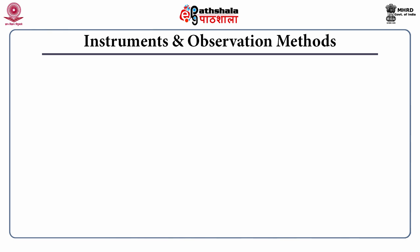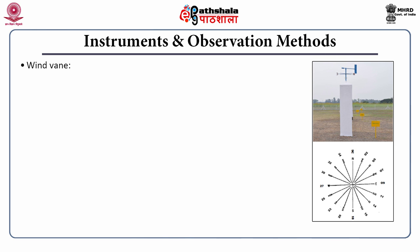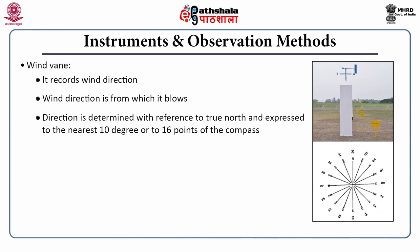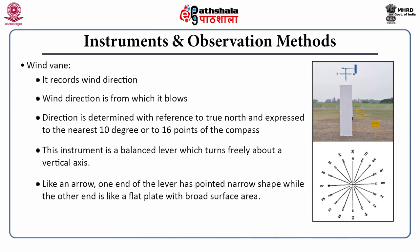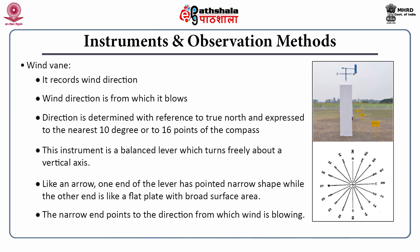Let us start with the wind vane. The wind vane records wind direction. Wind direction is the direction from which the wind blows. It is determined with reference to true north and expressed to the nearest 10 degrees or 16 points of the compass. This instrument is a balanced device which turns freely about a vertical axis. Like an arrow, one end is narrow and the other end is a flat plate, so the narrower end points to the direction from which wind is blowing.